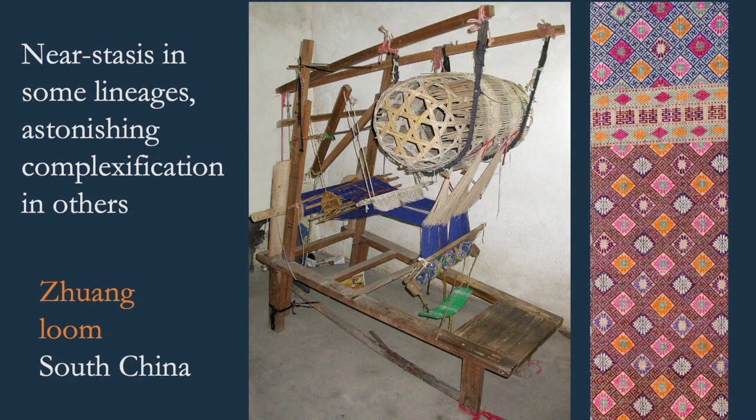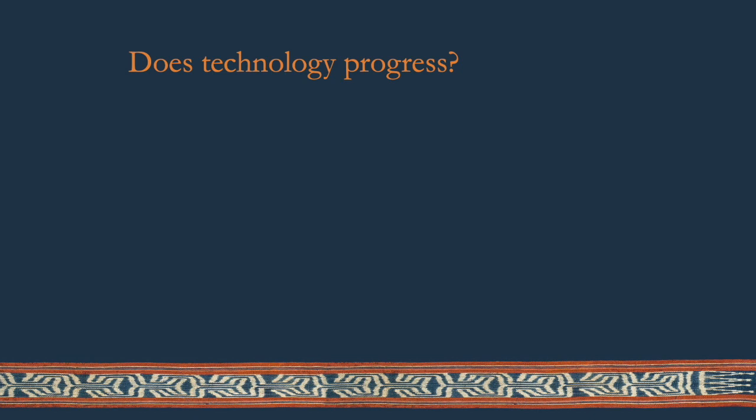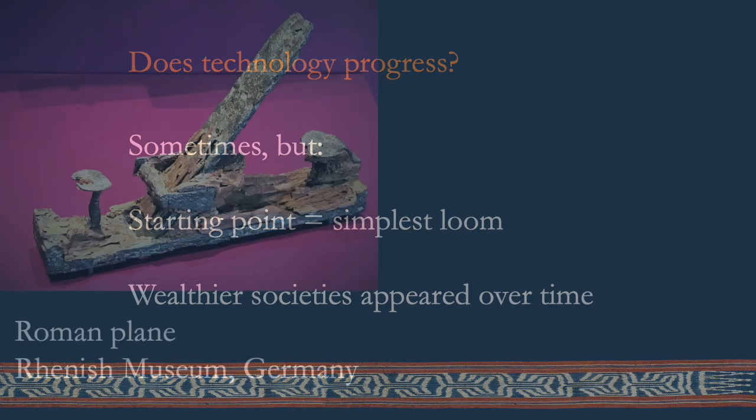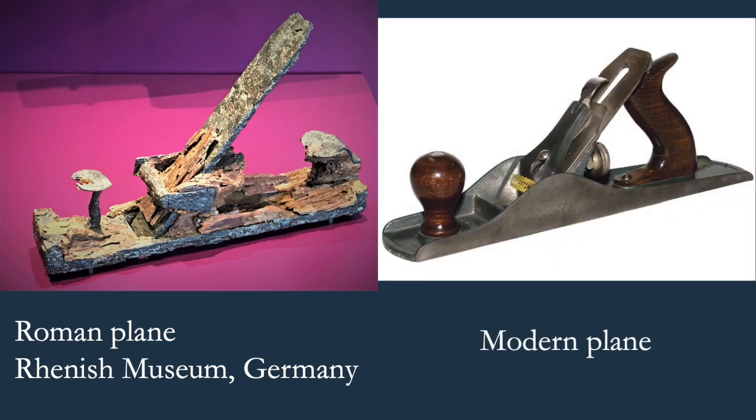When we think of technology, we usually think of progress in the same breath. So, does technology progress? Well, in many lineages it clearly has, but bear in mind that our starting point was the simplest loom, and wealthier societies have tended to become more numerous over time. So, it's perhaps not surprising that we see complexification in some lineages, but this is clearly not inevitable. In fact, technological stasis seems to be the norm in cultures that have remained stable and small in scale over time, and may in fact be the norm throughout much of human history. The remarkable stability of the Acheulian toolset during the Paleolithic period comes to mind. In contemporary life, we tend to notice things that change, but in fact, many tools that are in daily use have not changed in centuries, sometimes even longer.